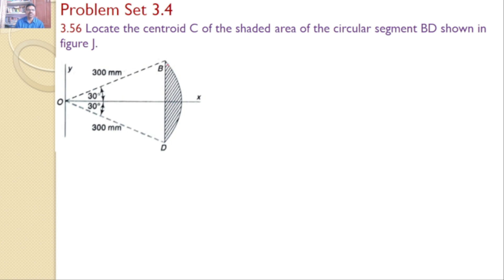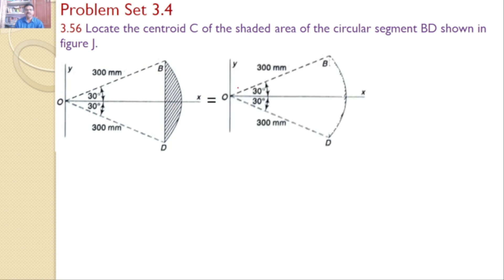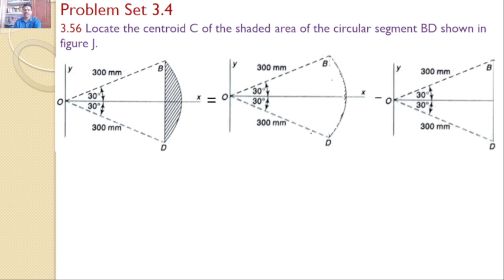We would like to find the centroid only for the shaded portion. For this, the total area is divided into two parts. The first one is the total circular segment OBD, and then we subtract the triangle OBD from it.